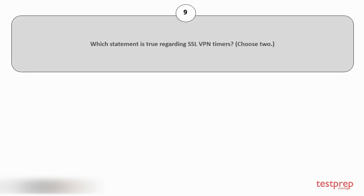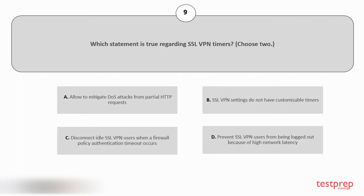Question number 9. Which statement is true regarding SSL VPN timers? Choose two. Your options are: A) allow to mitigate DOS attacks from partial HTTP requests; B) SSL VPN settings do not have customizable timers; C) disconnect idle SSL VPN users when a firewall policy authentication timeout occurs; D) prevent SSL VPN users from being logged out because of high network latency.